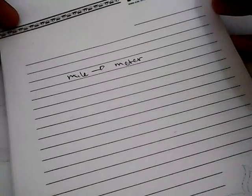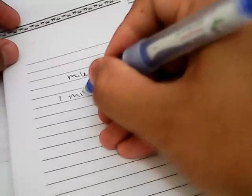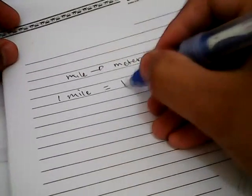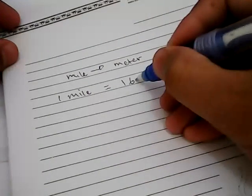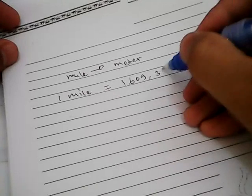Before we start our example equation solving problem, you need to know that 1 mile is equal to 1,609.34 meter.